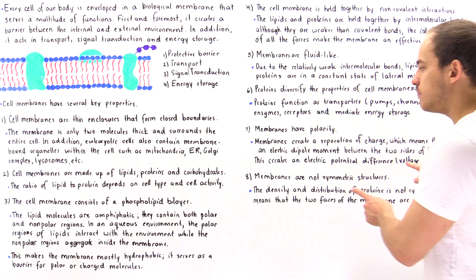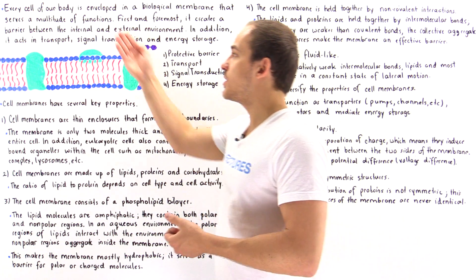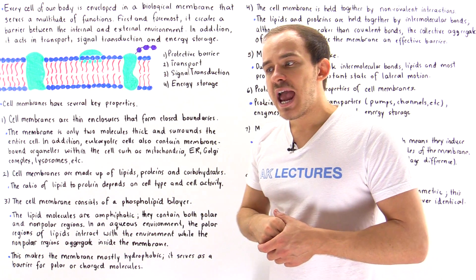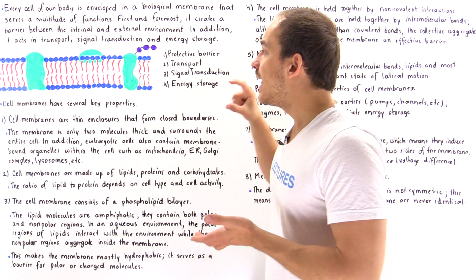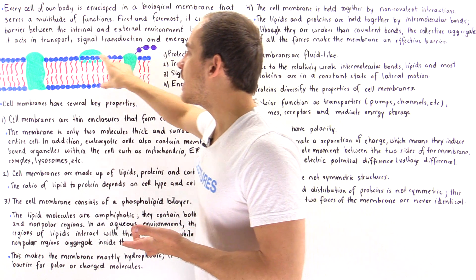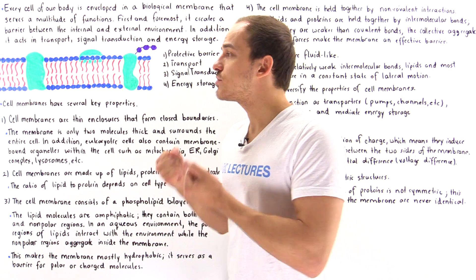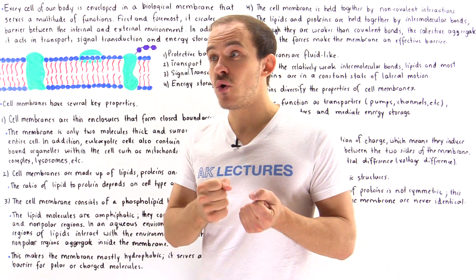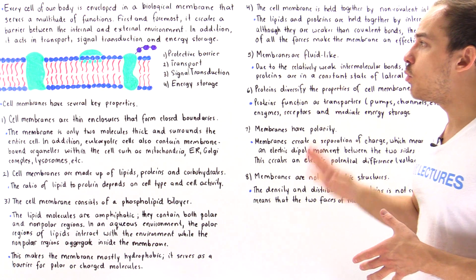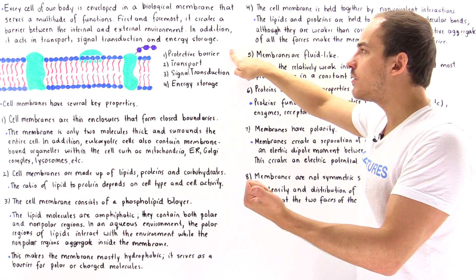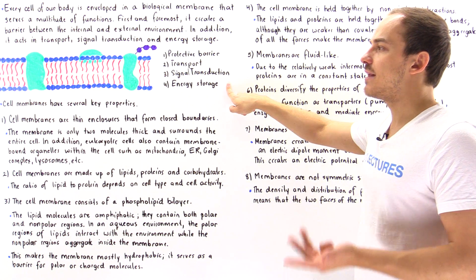There is actually an electric difference — a charge difference — between the outside and the inside of the cell. That creates an electric potential difference, a voltage difference. Electric field lines exist within the cell membrane, and a certain amount of energy is stored within that electric field. So the four important functions are: acting as a protective barrier, transport, signal transduction, and energy storage.